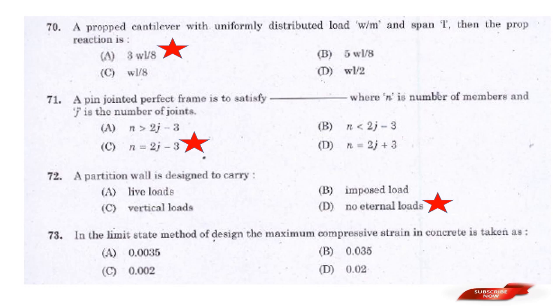Question: In the limit state method of design, the maximum compressive strain in concrete is taken as — Answer: Option C — 0.0035. The maximum compressive strain in concrete in the limit state method is 0.0035.